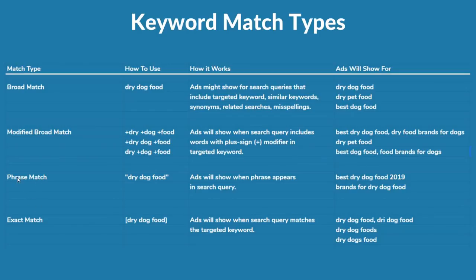The next one is phrase match keywords — it's exactly what it sounds like. Anytime this phrase is in the search query, it will target that search query with your advertisements. For example, best dry dog food 2019 would match because the phrase dry dog food is there. Brands for dry dog food would also match. However, if someone types dry food brands for dogs, it's not going to match because that exact phrase isn't in the search query in that order — the exact phrase has to appear in this order, otherwise your ad will not show.